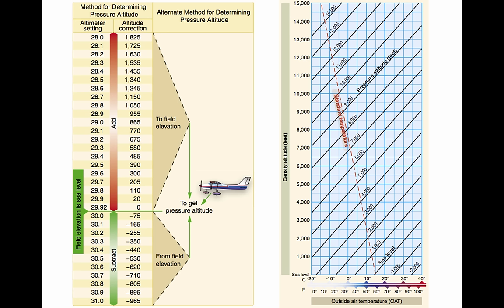Pressure altitude is the height above the standard datum plane. The aircraft altimeter is essentially a sensitive barometer calibrated to indicate altitude in the standard atmosphere. If the altimeter is set for 29.92 inches of mercury SDP, the altitude indicated is the pressure altitude — the altitude in the standard atmosphere corresponding to the sensed pressure. The SDP is a theoretical level where the pressure of the atmosphere is 29.92 inches. As atmospheric pressure changes, the SDP may be below, at, or above sea level.